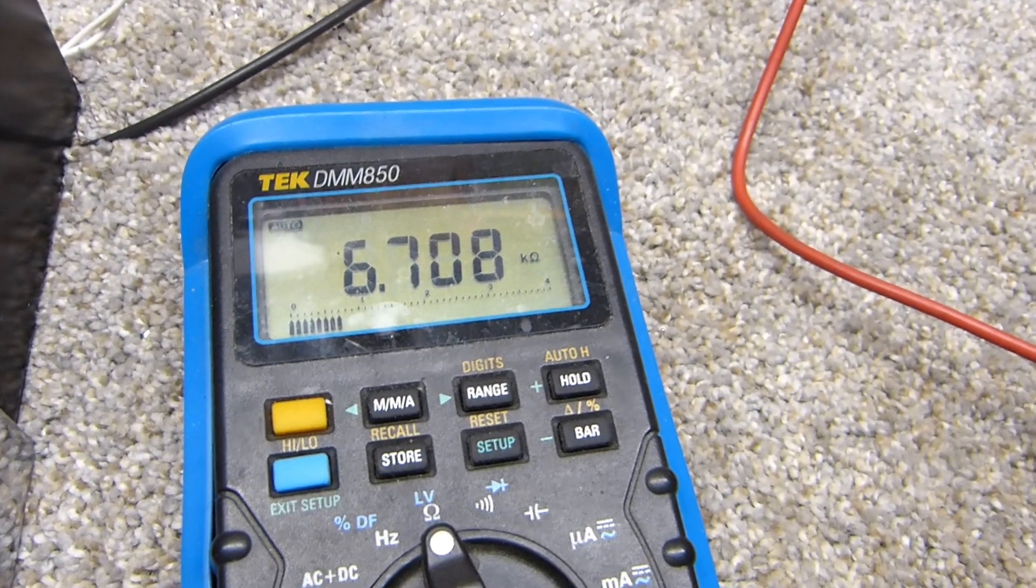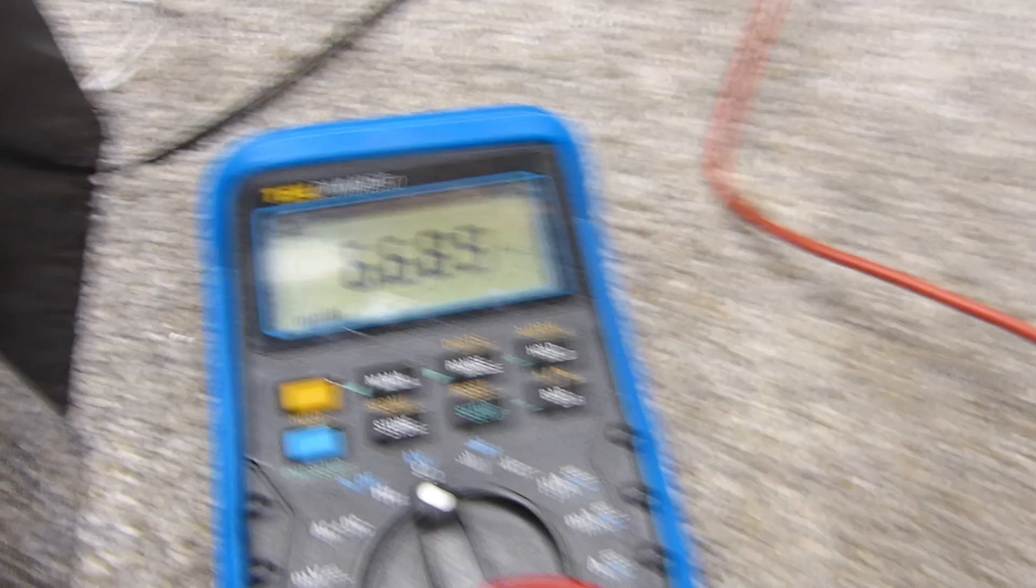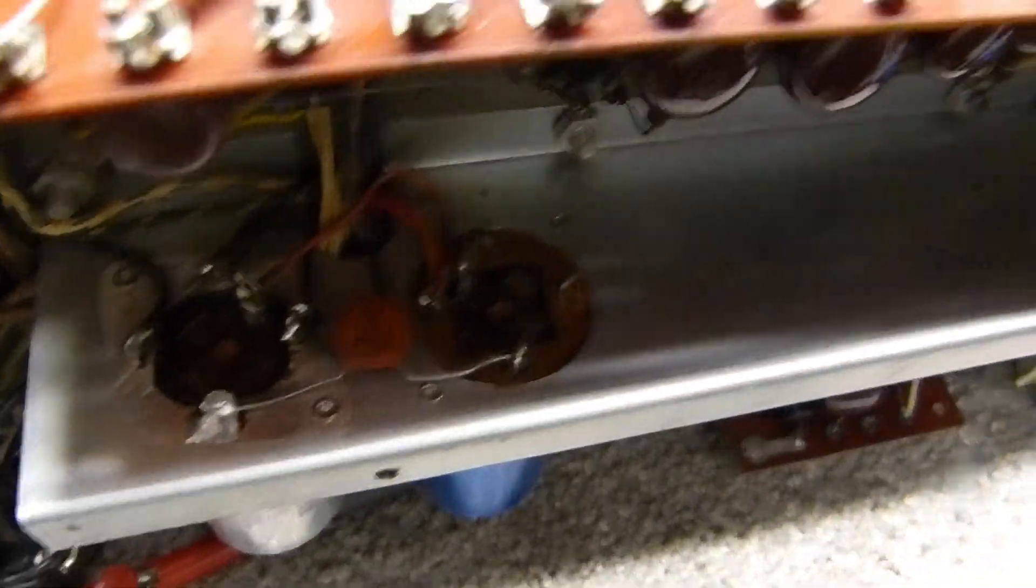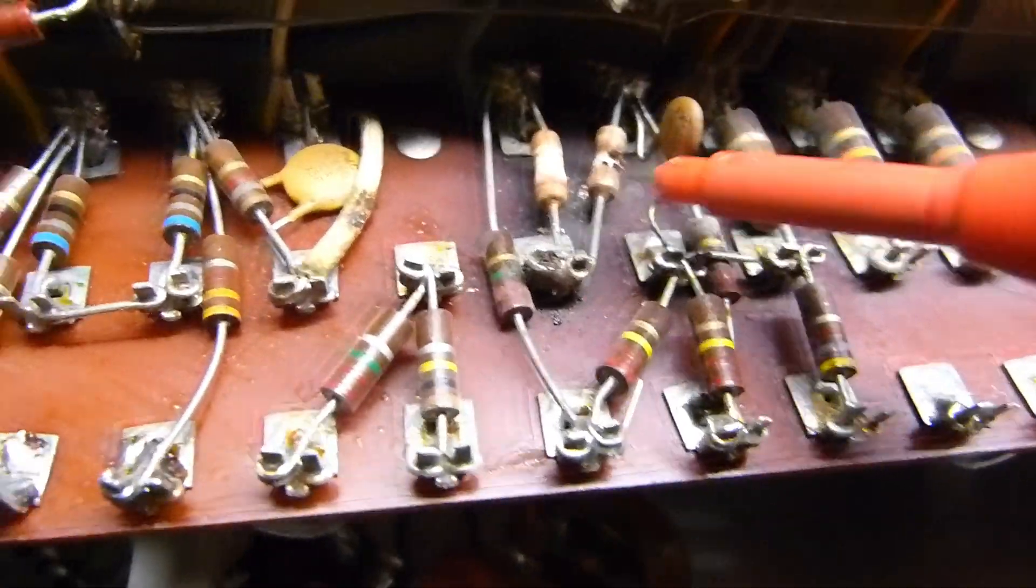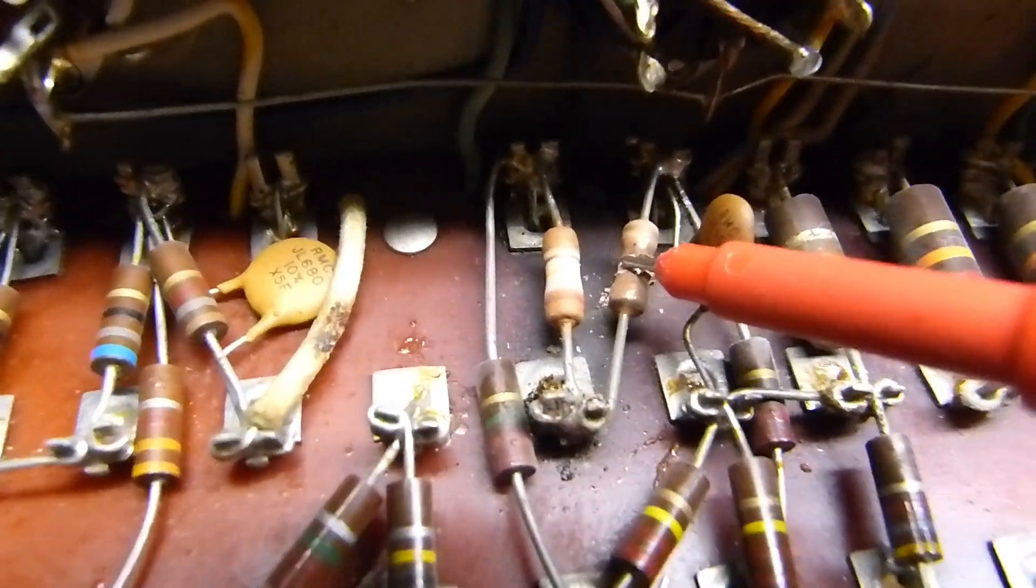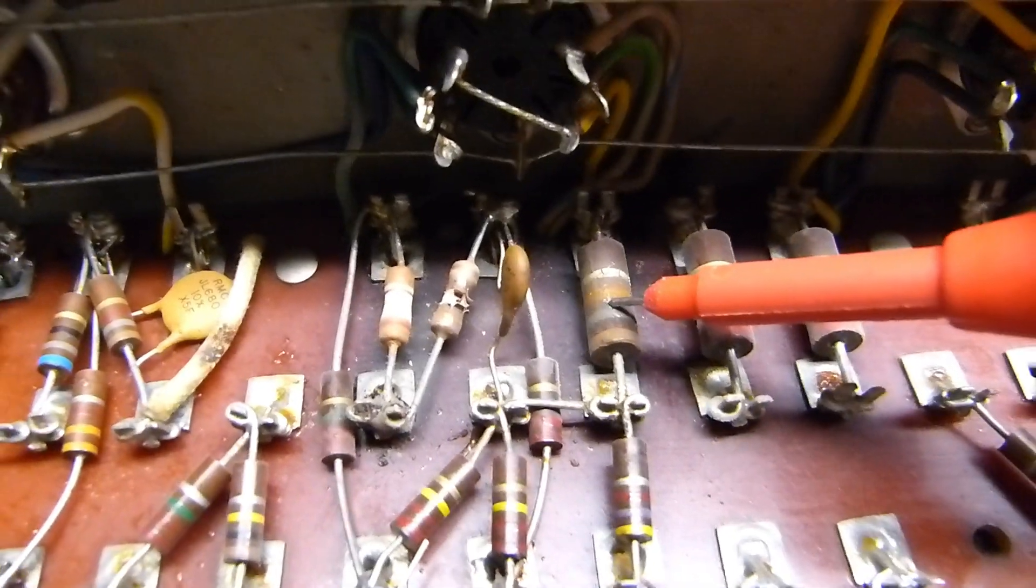This one over here measures 6.6k, 6.7k. So that one's bad. That's probably what started the avalanche, that's my opinion. Doing the best I can holding the camera steady. This one's open.